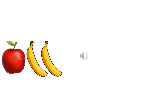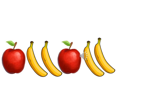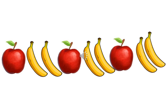Now let's make a pattern with fruits. Here I have one apple and two bananas, and I am going to arrange apple and bananas in a particular order. One apple, two bananas. Now after bananas what will come? Apple. And how many bananas will come? Two bananas. And after bananas — apple, and lastly two bananas.